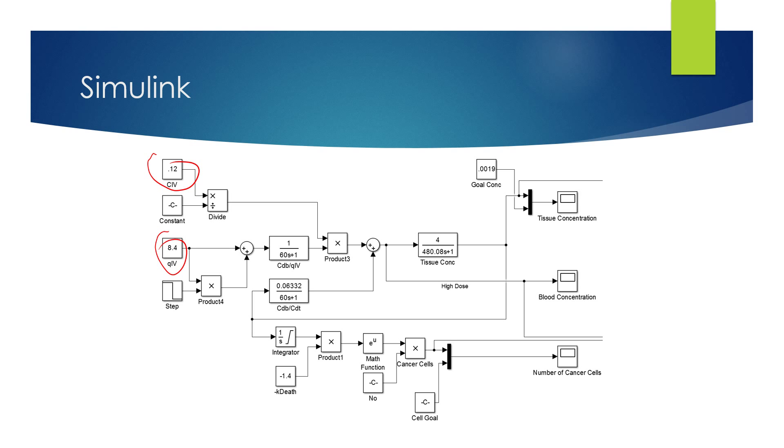And then we have our two transfer functions for the blood and our transfer function for the tissue. And once we had that established, we had our concentration in the tissue known, and we were able to then feed it into our equation for cell death. Now we didn't do a transfer function for that due to complications and time constraints, and so it was easiest for us just to put it in in the time domain.